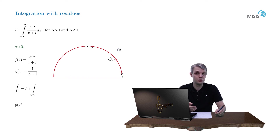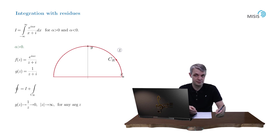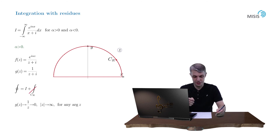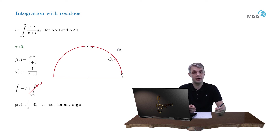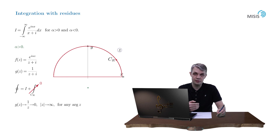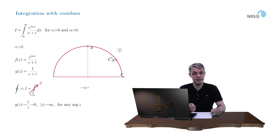Our new closed contour integral is equal to our original integral plus the semicircular arc integral. The integrand is precisely of the form which enters Jordan's Lemma: our g of z function decays as 1 over z for large z and obviously tends to zero independently of its argument, so Jordan's Lemma is satisfied. Since alpha is positive, the integral along the upper arc vanishes, and therefore our closed contour integral is simply equal to our original integral. Now we may employ the residue theorem. The only pole of our function is at z equals minus i, and it lies outside the upper contour, so the closed contour integral equals zero for positive values of alpha.